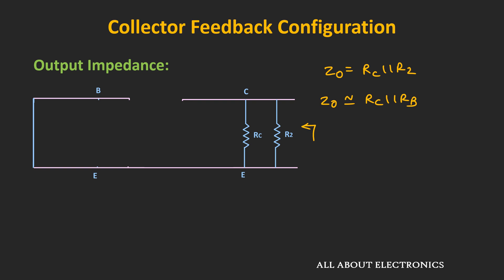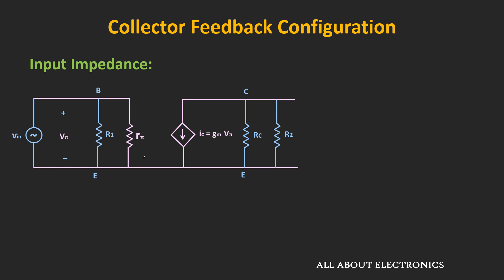Similarly, let's find the input impedance, which is the equivalent impedance seen from the input side. In this case, it is the parallel combination of R1 and Rπ, where R1 = RB / (1−Av). The value of R1 depends on RB as well as the voltage gain. But in any case, this input impedance will always be less than Rπ, meaning the input impedance is in the moderate range for this configuration.